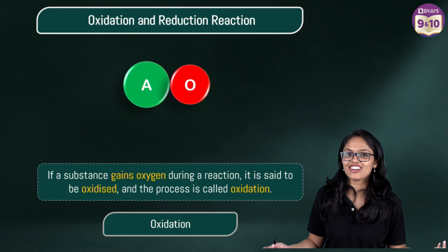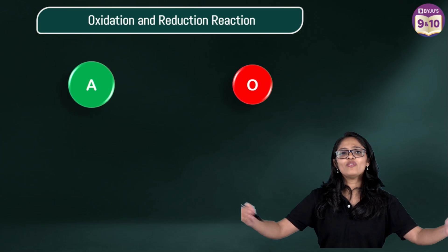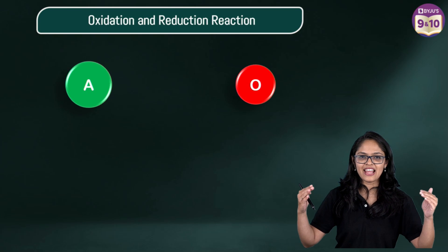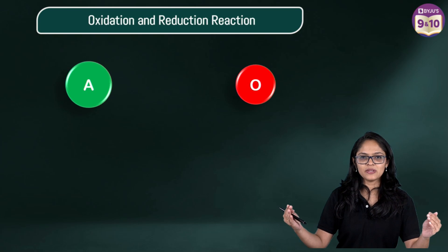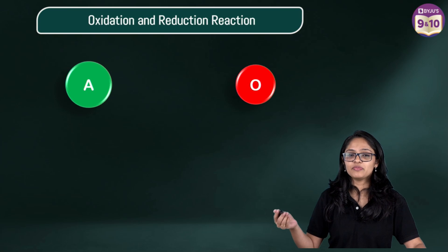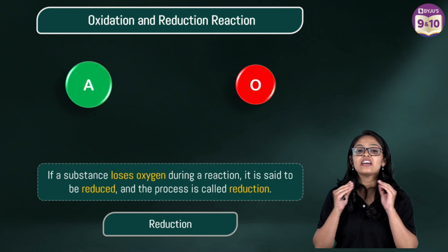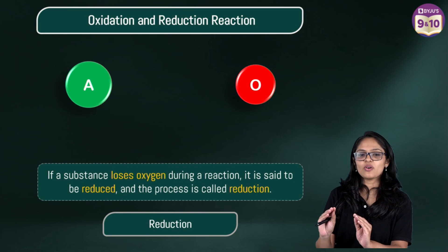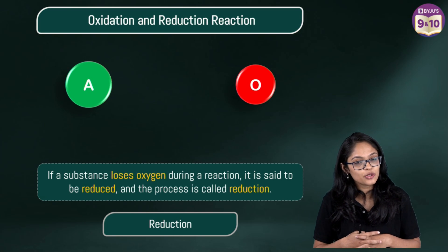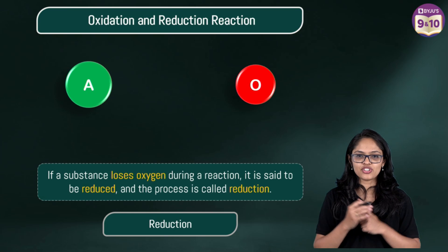What is reduction then? Simple. The removal of an oxygen atom during the reaction is called reduction and that process is called reduction. If a substance loses an oxygen atom during a reaction, it is said to be reduced and the process is called reduction.